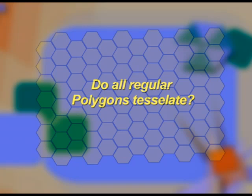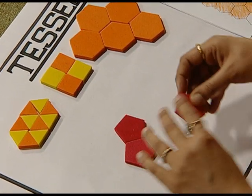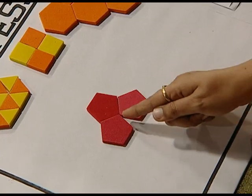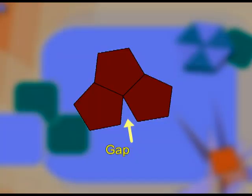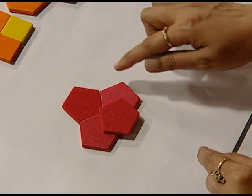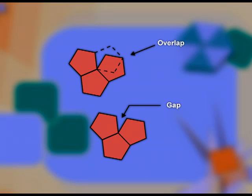After having explored these tessellations, the next natural question that arises is: do all regular polygons tessellate? Let us try to do the same thing with a set of pentagons. On placing three pentagons next to each other, we observe that there is a gap left. If we pick up a fourth pentagon to try and fill this gap, we observe that there is an overlap, and therefore we can say that these pentagons are not tessellating.